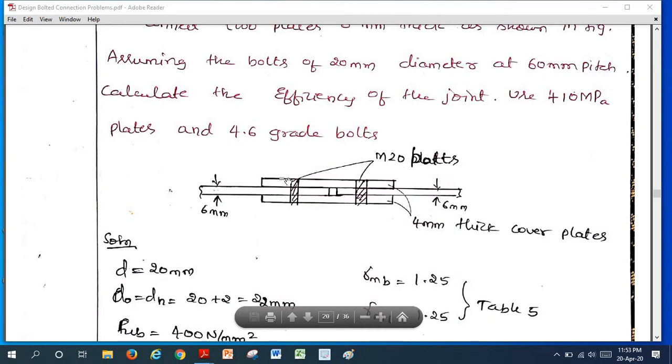While analyzing, while calculating the load value or efficiency, we should analyze just half of the portion of the butt joint. Either this portion or this portion. We are not supposed to consider both portions. Here since there is a gap between the main plates, the force is not transferring main plate directly to this. We should calculate everything for half portion of the joint.